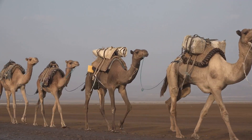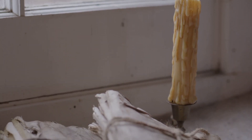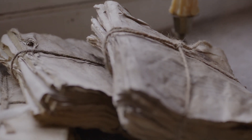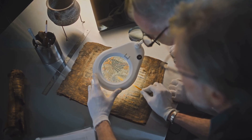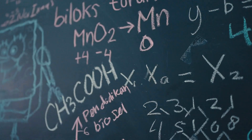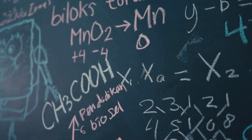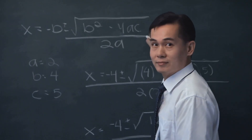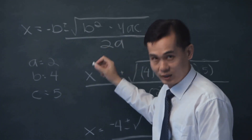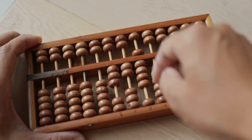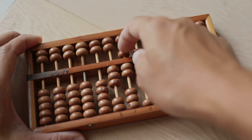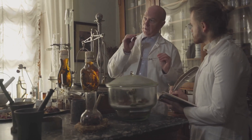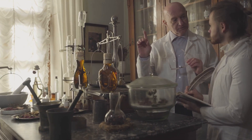Zero's journey from India to the West was a long and gradual process. Arab scholars, recognizing the power of this new number, adopted it into their own mathematical system. Through their translations and scholarship, zero reached Europe in the Middle Ages. Initially met with resistance as many clung to older Roman numerals, zero eventually gained acceptance. The adoption of the Hindu-Arabic numeral system, with zero at its heart, revolutionized mathematics in Europe, simplifying calculations and leading to advancements in algebra, calculus, and other fields — ushering in a golden age of scientific discovery.